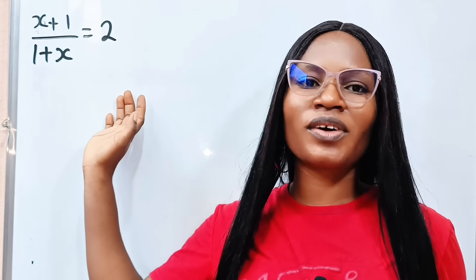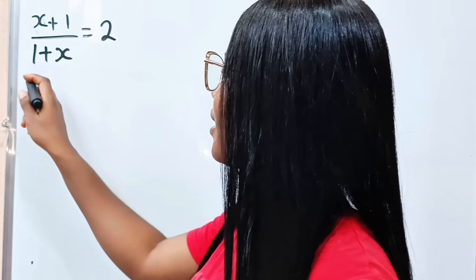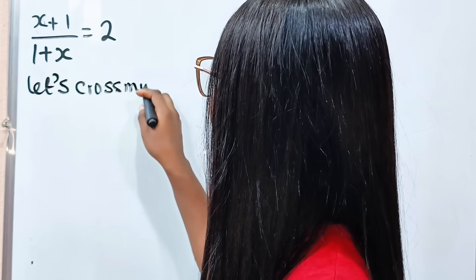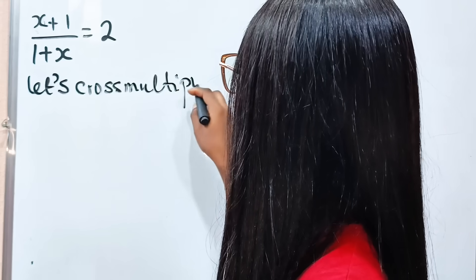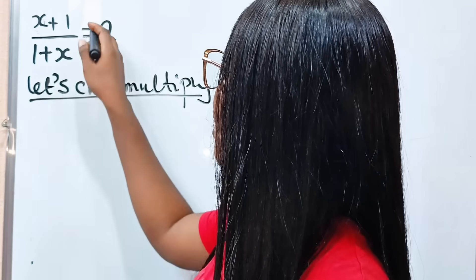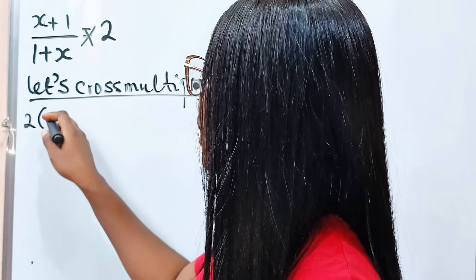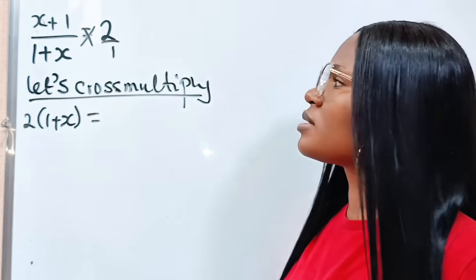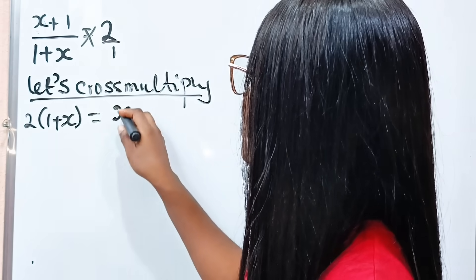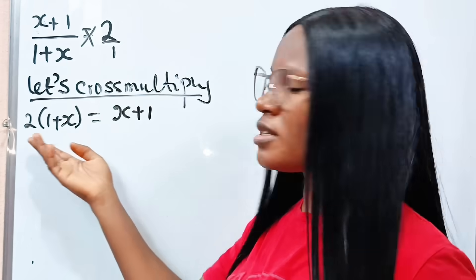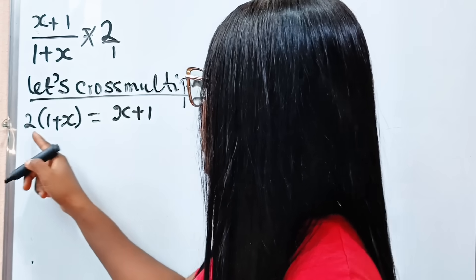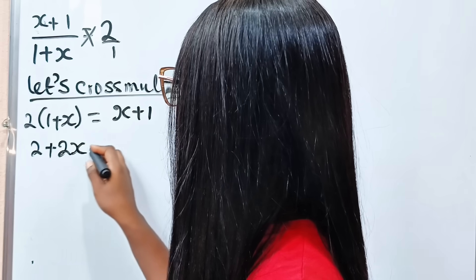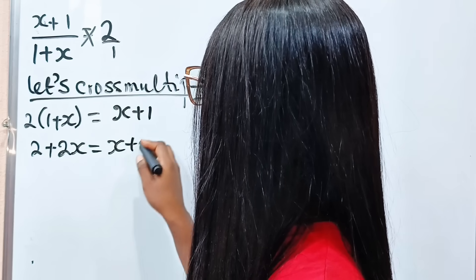Now, first of all, let's cross multiply. So if we cross multiply, we are going to have 2 times — this will give us 2 brackets — 1 plus x, is equal to — this is 2 over 1 — is equal to x plus 1. Now let's open the brackets. If we do that, we have 2 times 1 is 2, plus 2 times x is 2x, is equal to x plus 1.